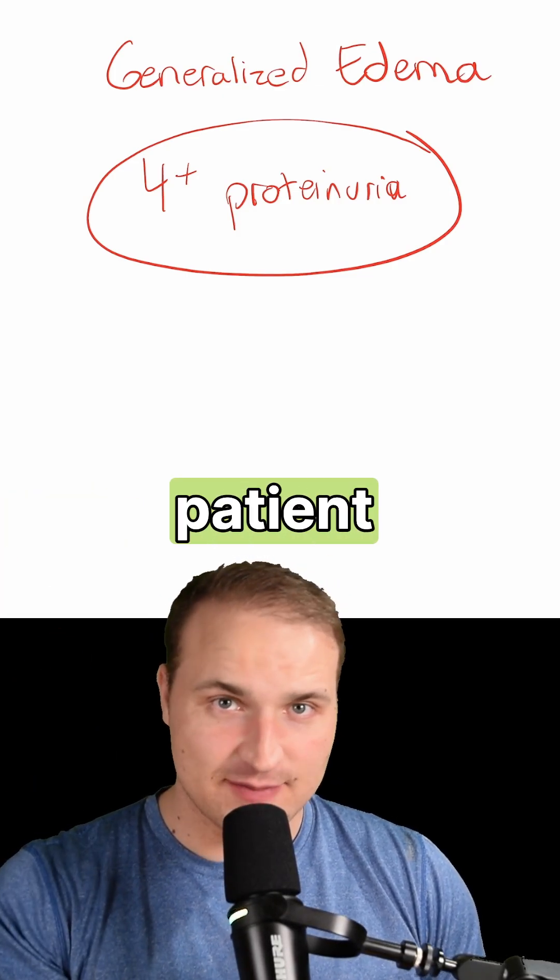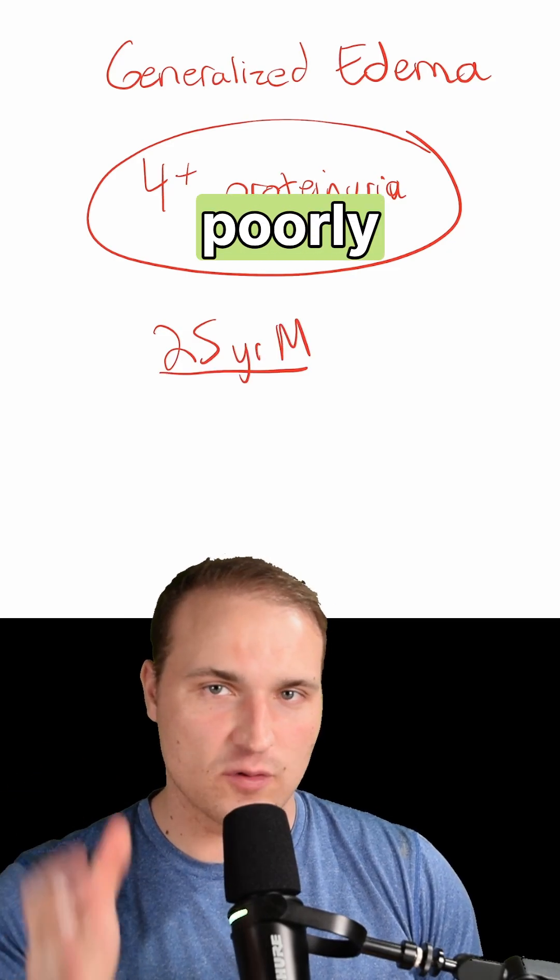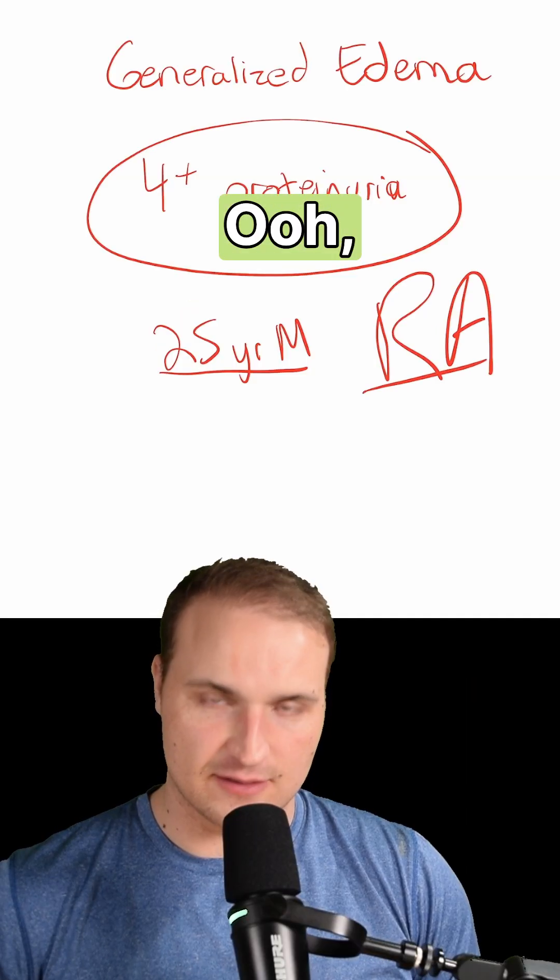Now the second thing we do is ask why this patient has nephrotic syndrome. Let's say they're a 25-year-old with a history of poorly controlled rheumatoid arthritis.